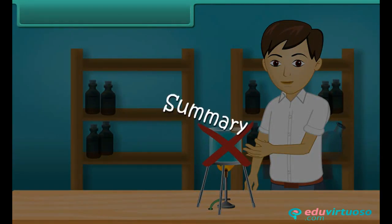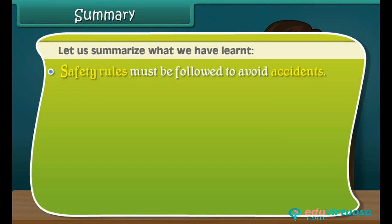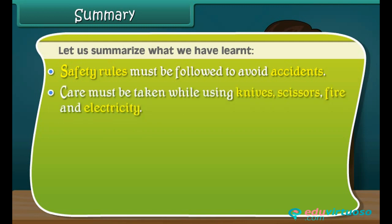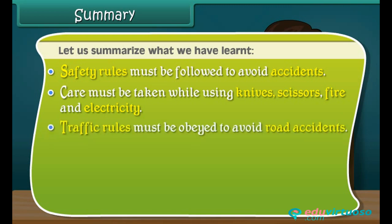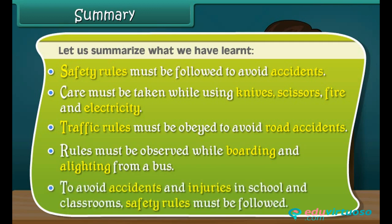Summary: safety rules must be followed to avoid accidents. Care must be taken while using knives, scissors, fire, and electricity. Traffic rules must be obeyed to avoid road accidents. Rules must be observed while boarding and alighting from a bus. To avoid accidents and injuries in school and classrooms, safety rules must be followed.